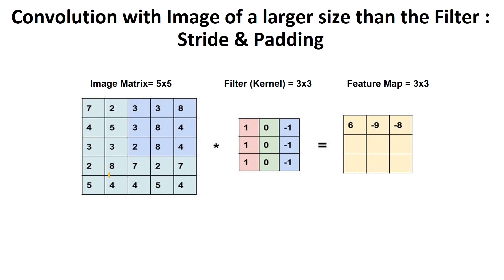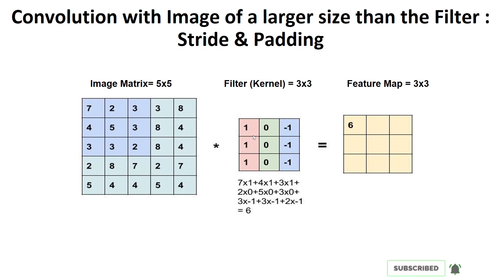Assume we are given a matrix of 5 by 5 and the kernel is 3 by 3. We know we cannot directly multiply them. What we do is get a 3 by 3 portion of the larger matrix, multiply it element-wise with the filter (the star operator indicates element-wise), sum all the values after multiplication, and put the resulting value into the corresponding location of the feature map. We multiply the first part of the image matrix with the filter, sum the values, and place them there. Then we move one column at a time.